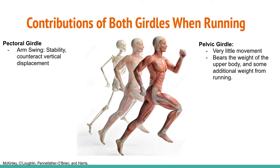When running, our arms swing in sync with each leg on the opposite side. For example, the left arm swings when the right leg steps, and vice versa. Arm swing is understood to be necessary for stability and to counteract vertical movement, occurring by contraction and relaxation of the posterior and anterior muscle groups of the thorax. There is not a significant amount of weight being put on the pectoral girdle when running. Comparatively, there is much more movement at the pectoral girdle than at the pelvic girdle. There is very little movement at the pelvic girdle because of its connection with the sacrum at the base of the axial skeleton.